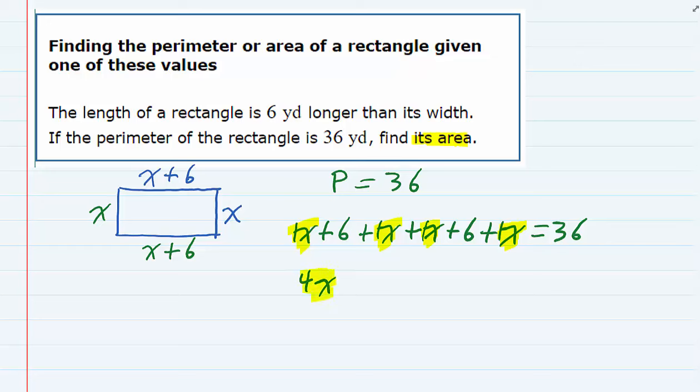And then looking at the numerical terms, I have a plus 6 and a plus 6. Those will add up to be a plus 12. And the other side will still be 36.